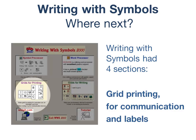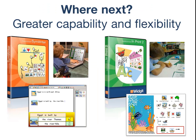However, since then many things have changed. Computers are faster with much better capacity, and people have much greater aspirations about what they want to do with symbols. Because of the technology changes, we needed to completely rewrite our symbol software. And in doing so, we listened to what our customers wanted, and as a result, we decided to split Writing with Symbols into two separate programs.